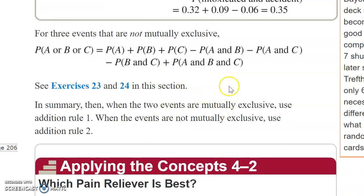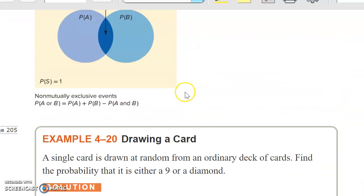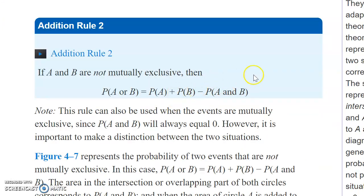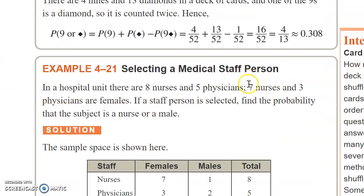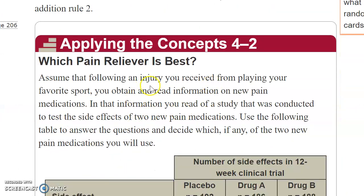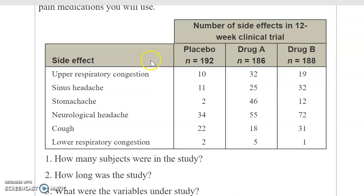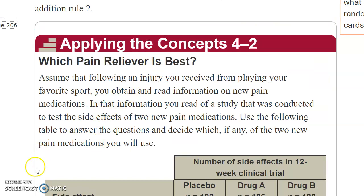So here's a summary: when two events are mutually exclusive, use Addition Rule 1 — if they're disjoint, use Rule 1. If they're not mutually exclusive, use Addition Rule 2. That wraps up Section 4-2. I strongly urge you to look at the Applying the Concepts section — they're very useful. Work your way through them, and that concludes this video.